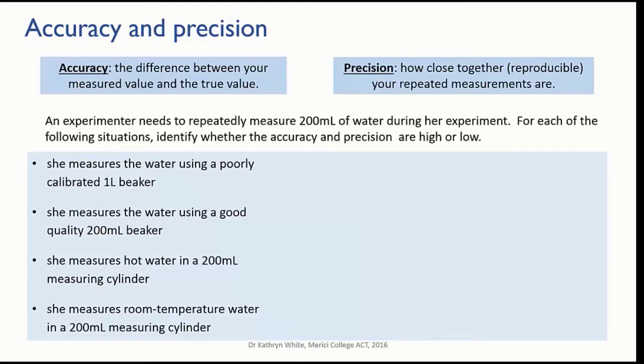Pause the video and read the four scenarios here, and think about potential random and systematic errors for each one. Decide whether the accuracy will be high or low in each case, and whether the precision will be high or low.